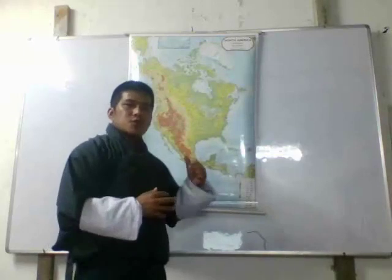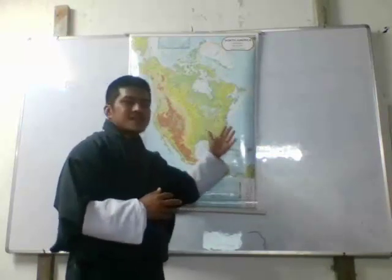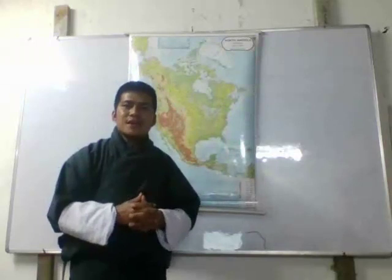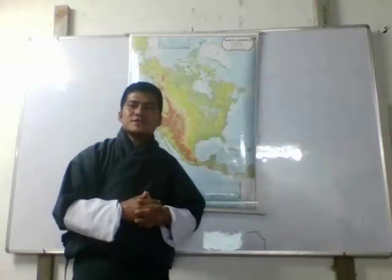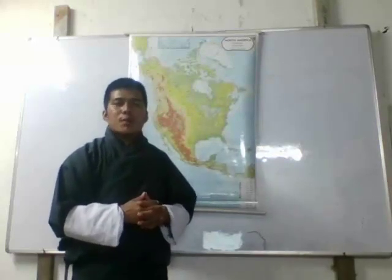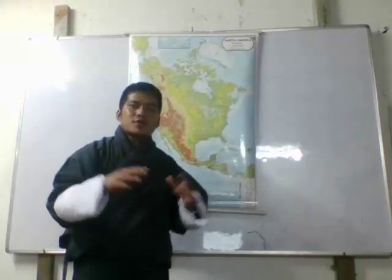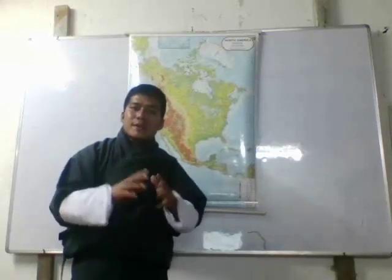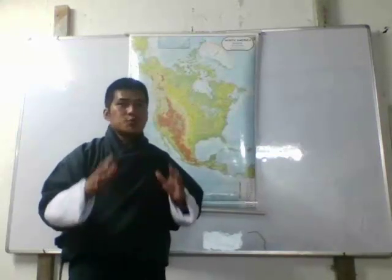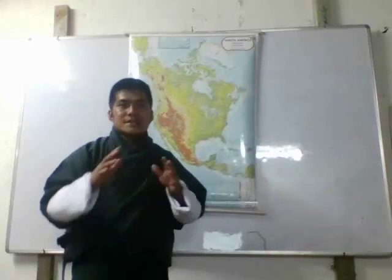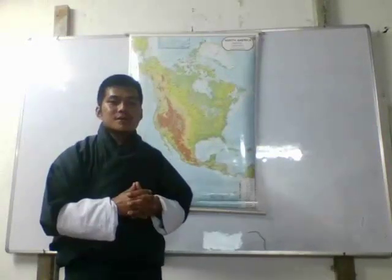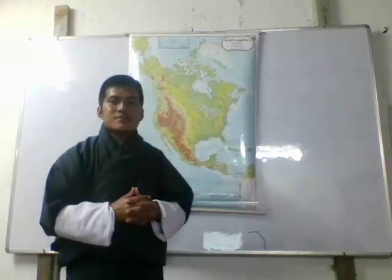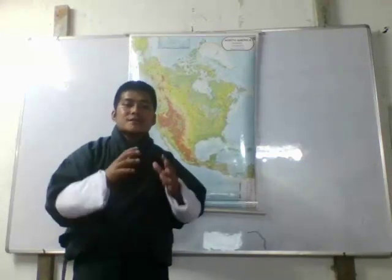You have learned about the Western Highlands and Eastern Highlands of North America in the previous class. So today in this first session of the virtual class, I'll be teaching you about the lowlands of North America. The lowlands of North America is divided into two parts: firstly, the Great Central Lowland, and number two, the Eastern Coastal Plain.